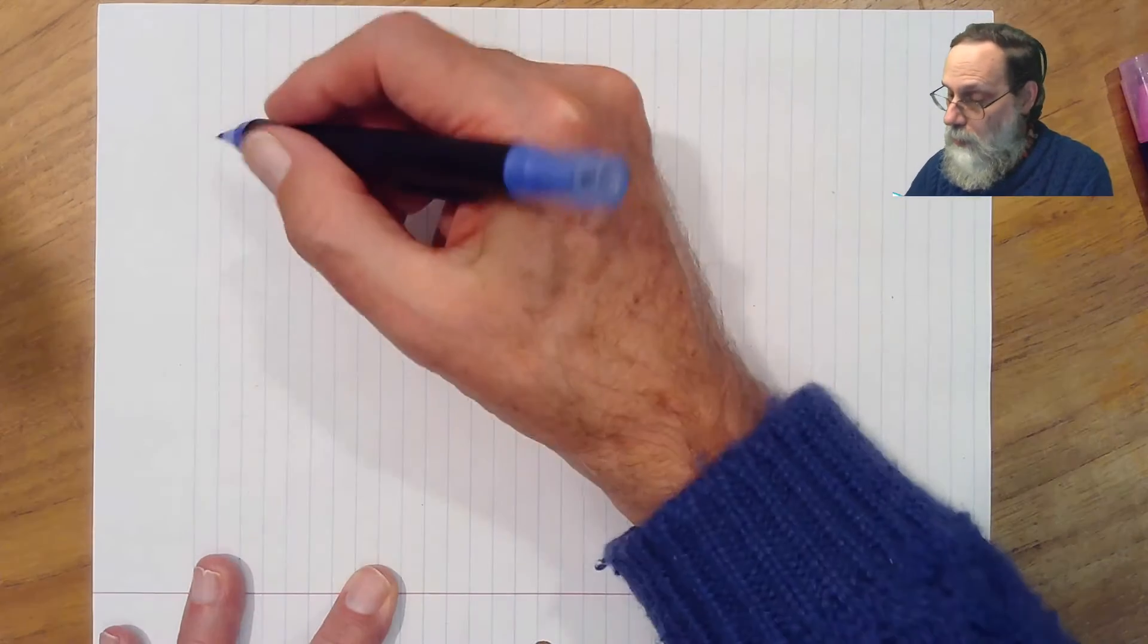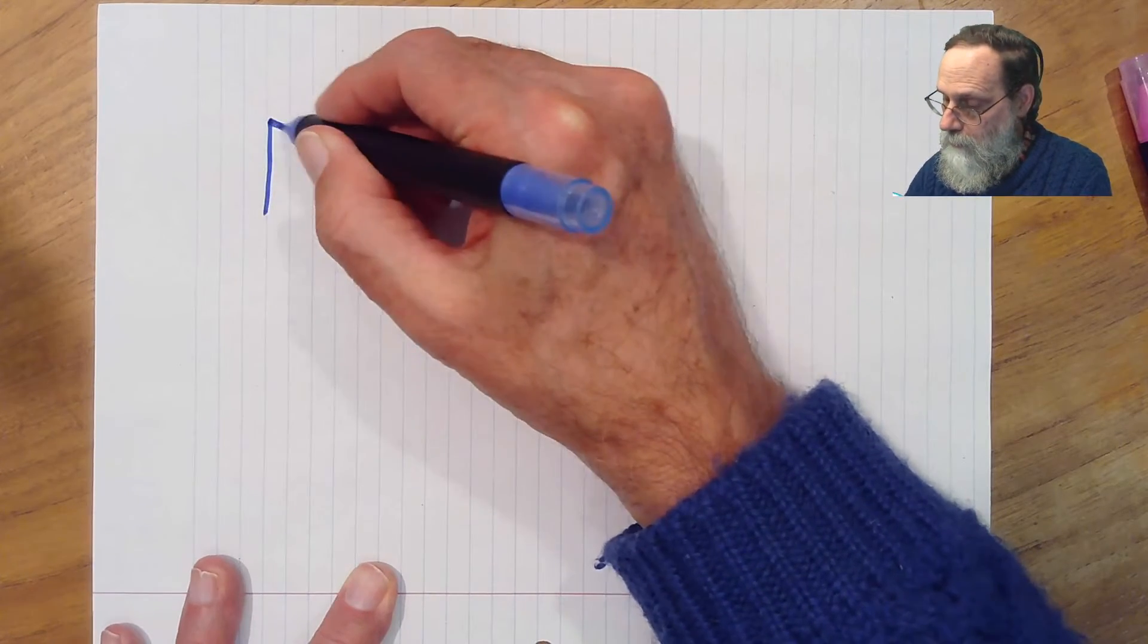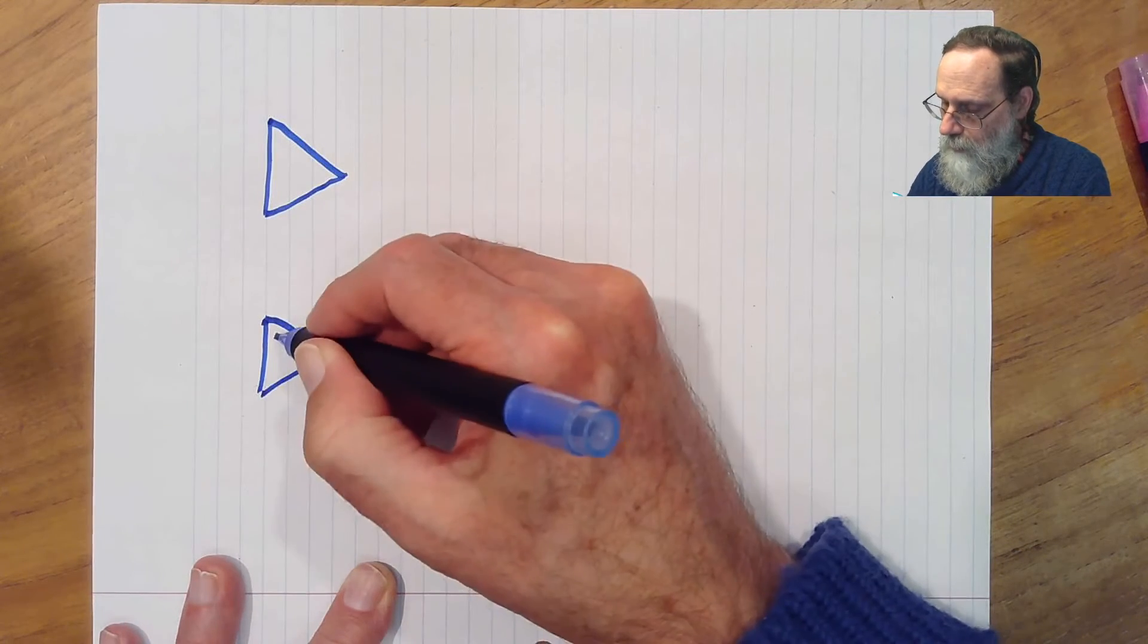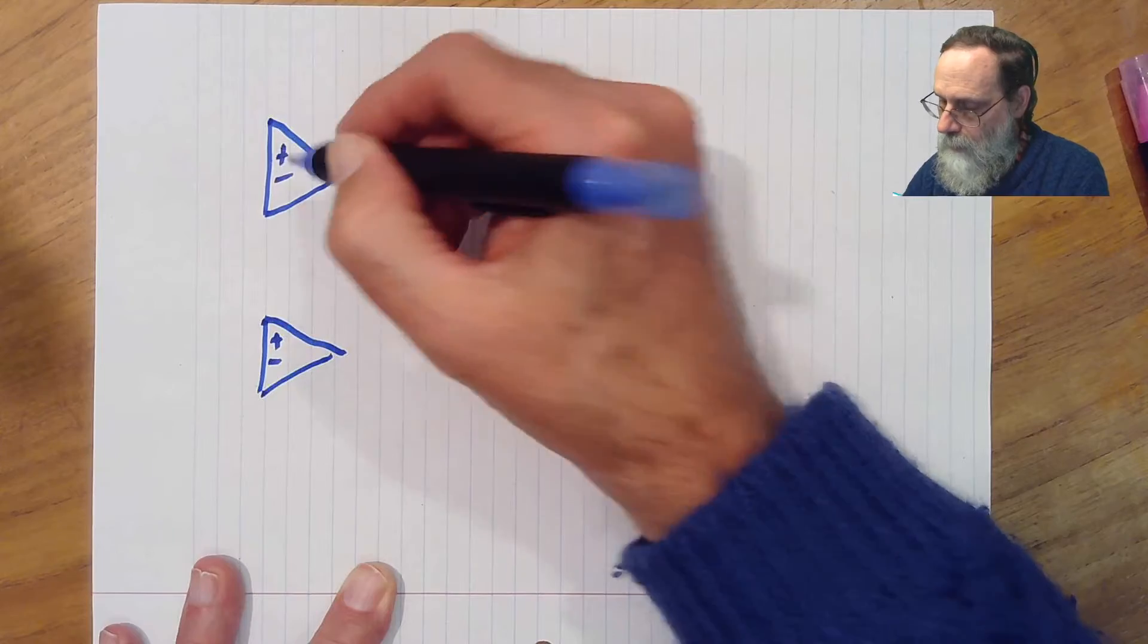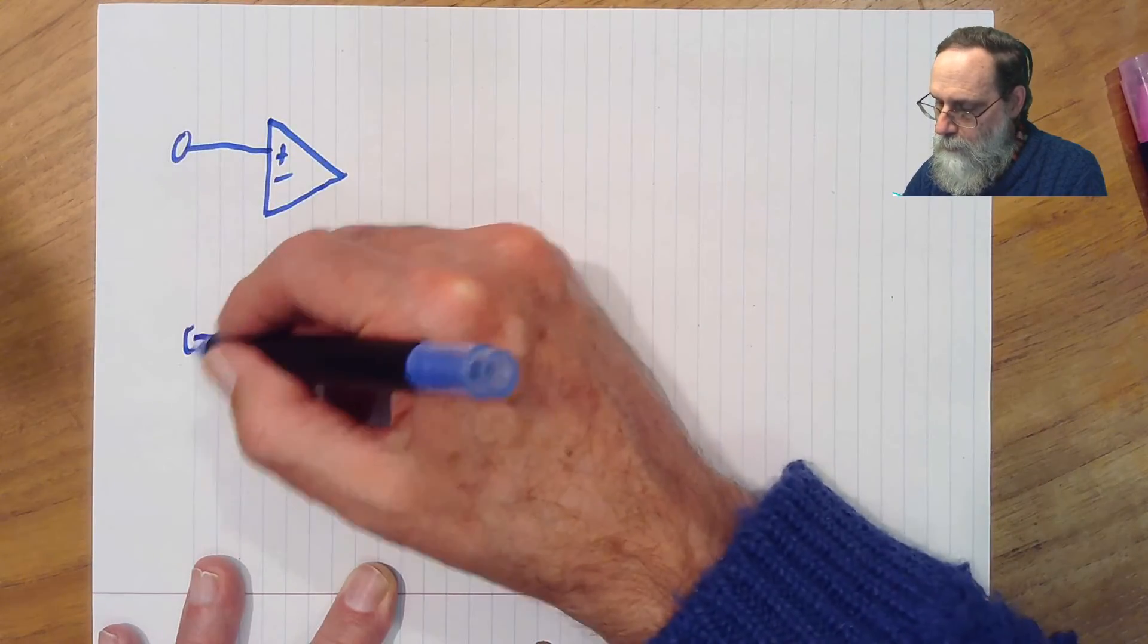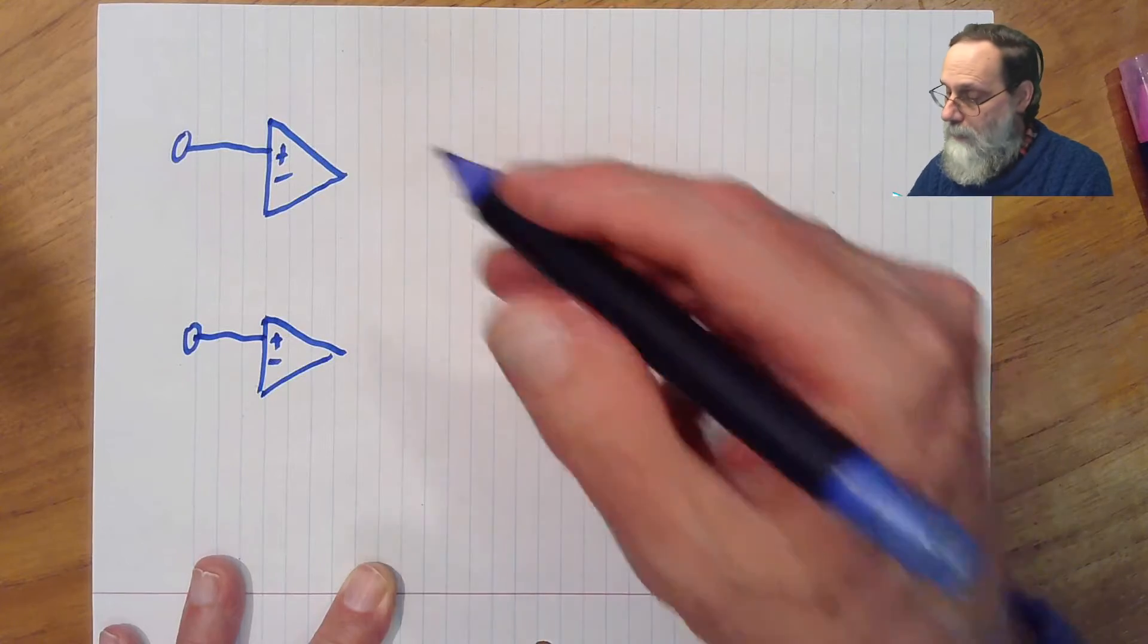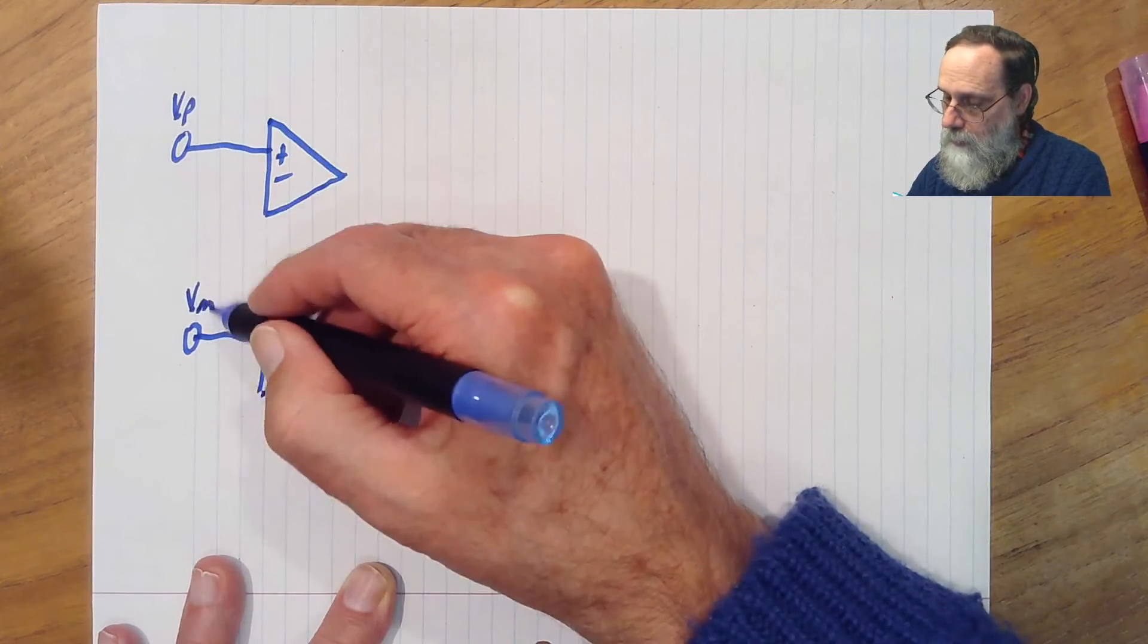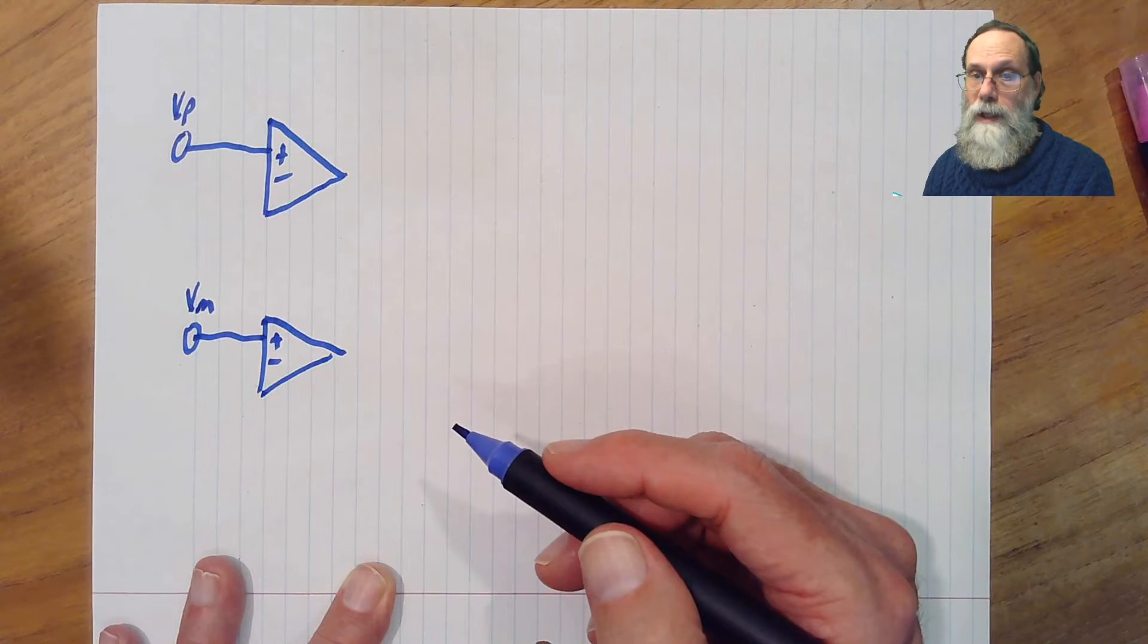Let's just start with two op-amps, and for each one, we'll make the positive input be one of the two inputs of the instrumentation amplifier.